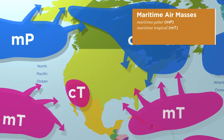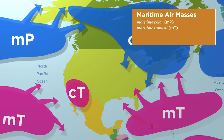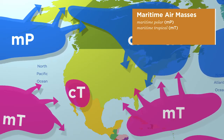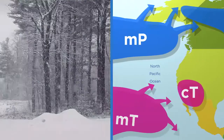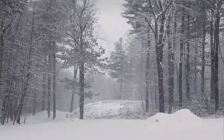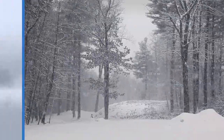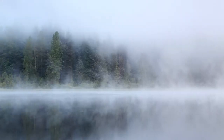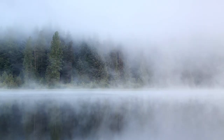In the United States, maritime polar air masses form in the northern Pacific and Atlantic Oceans. When these air masses enter an area, they bring cold, moist air. In the winter, these air masses can bring snow or rain, and in the summer, they typically bring cool, rainy, and even foggy weather.